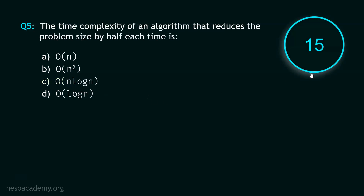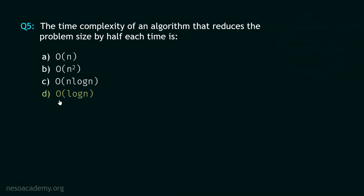Now let's move to question number 5. Your time starts now. Stop. The correct option is option D — O(log N). The time complexity of an algorithm that reduces the problem size by half each time is clearly O(log N), because an algorithm which reduces the problem size by half will eventually have a logarithmic time complexity.